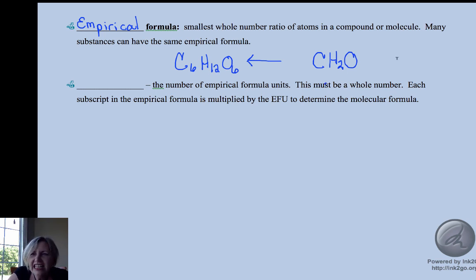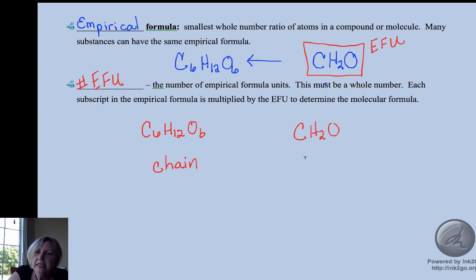I like to call this an empirical formula unit. What we want to find out in our mathematics is the number of empirical formula units. If we envision C6H12O6 as our chain, the empirical formula unit is our link, and what we want to be able to ultimately find out is how many links are in this chain.